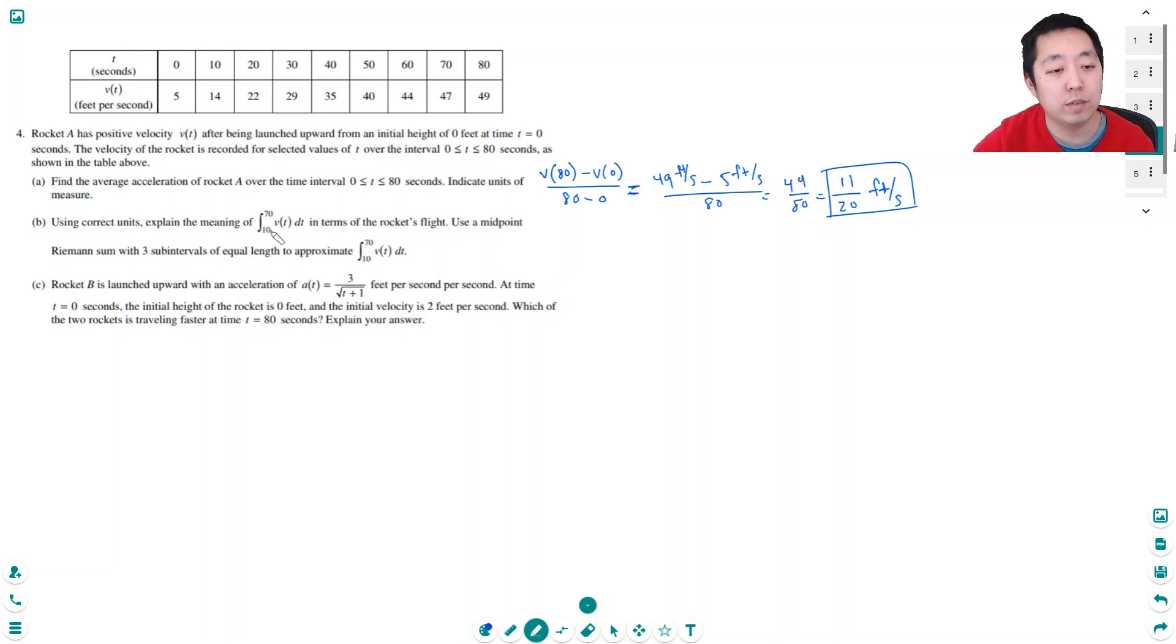Using correct units, explain the meaning of the integral from 10 to 70 v of t dt in terms of the rocket's flight. This integral, if I'm going to do the area under the velocity curve, is the change in position. Don't use distance traveled. It is not the distance traveled. It's simply the change in position from 10 seconds to 70 seconds.